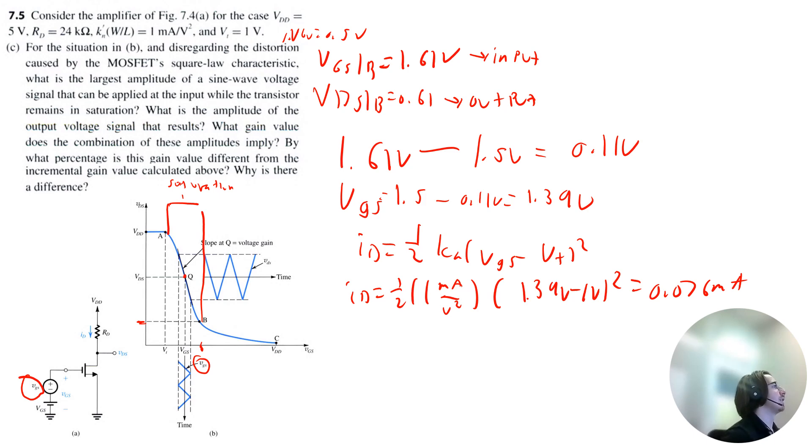And we can calculate VDS, this point here, as VDD, which is 5 volts minus ID times RD. So 0.076 milliamps times RD, 24 kilo ohms. So I get VDS is equal to 3.175 volts.